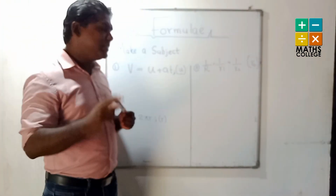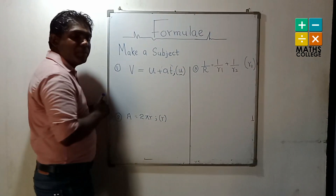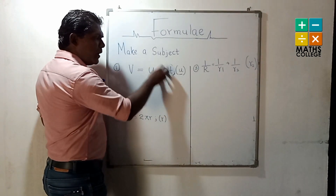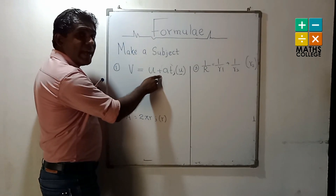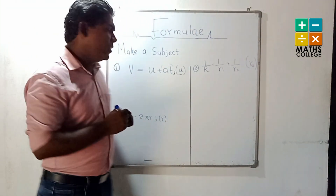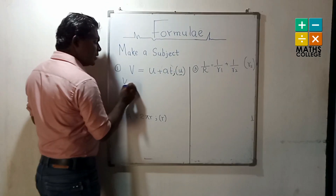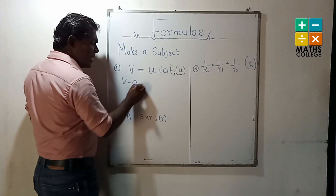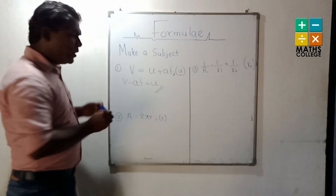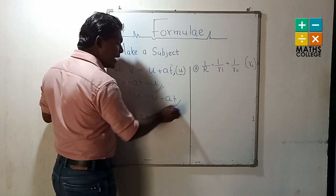Look very carefully. In the first example, you have to apply the opposite operation. We have to remove 'at' from this side because 'u' is the subject. This term is related by addition. The opposite operation of addition is subtraction, so we take this whole term to the other side with subtraction. The answer can be written like this — with subtraction on the other side.